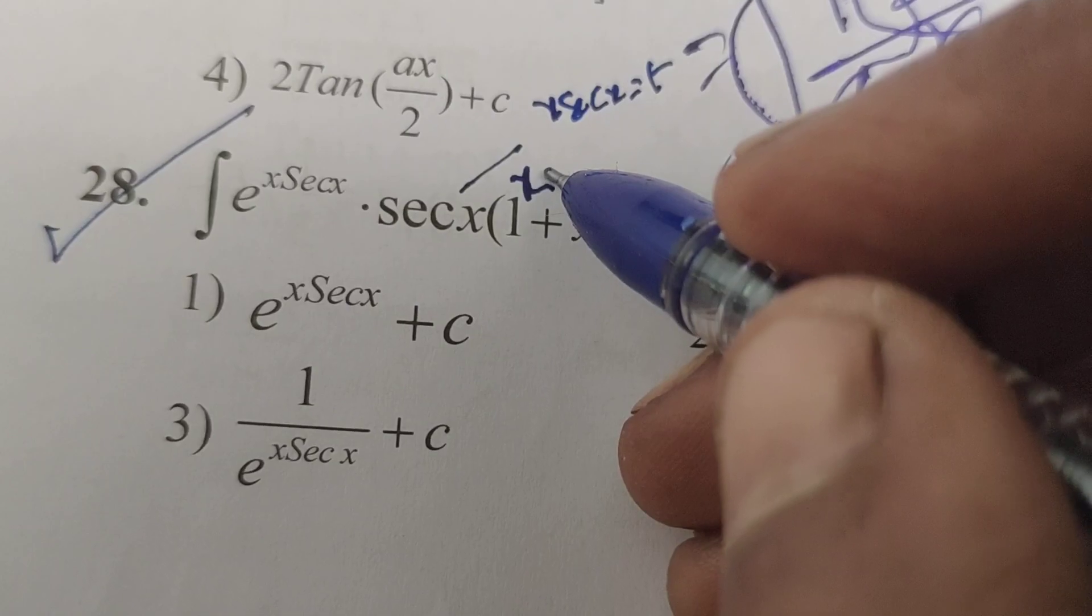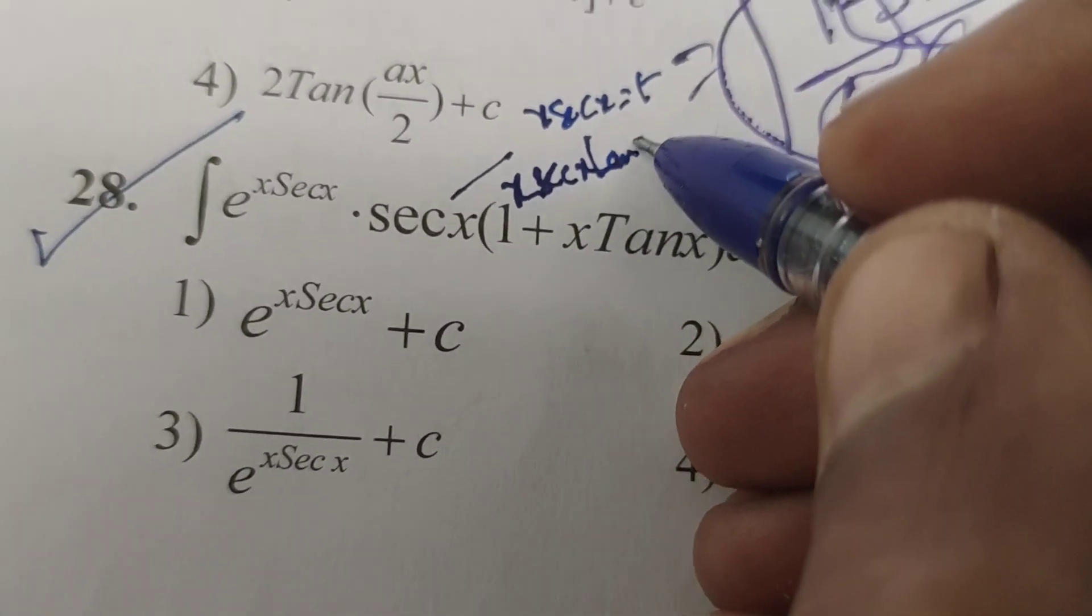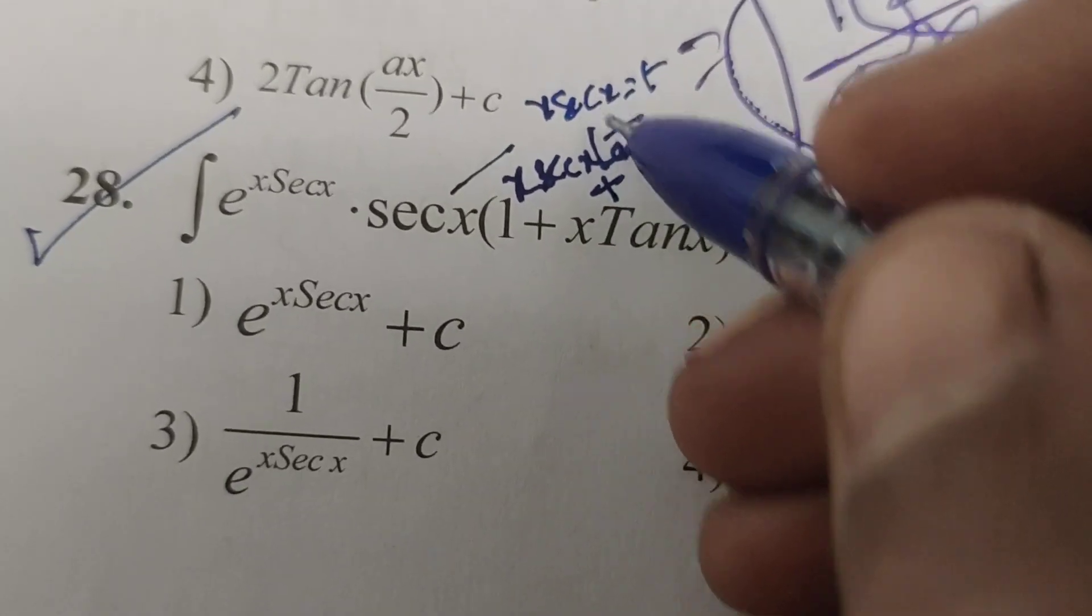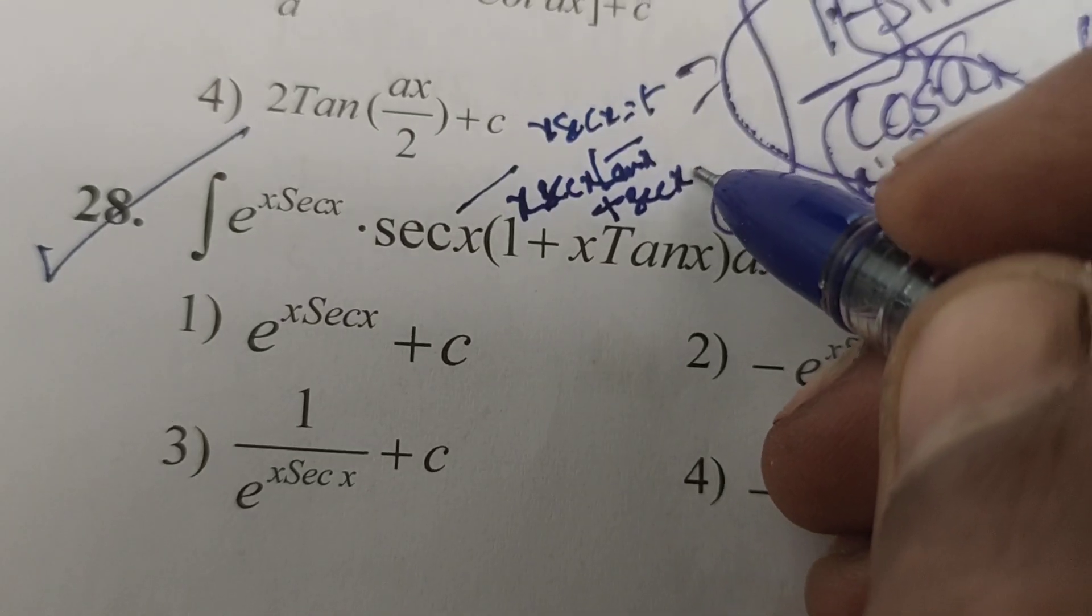Now differentiate sec x: sec x tan x. Next, that plus v into, v means sec x. Now differentiate x, that is 1.